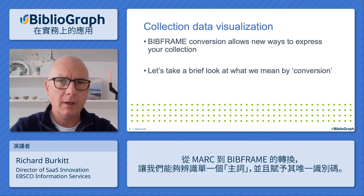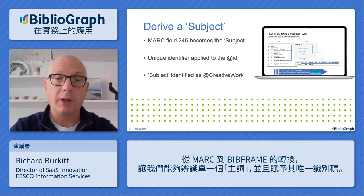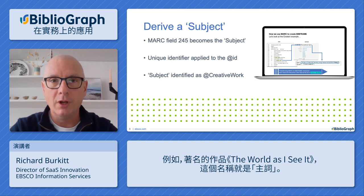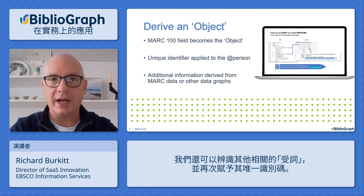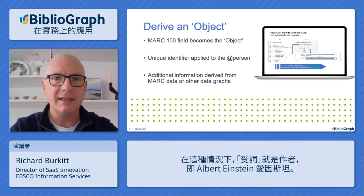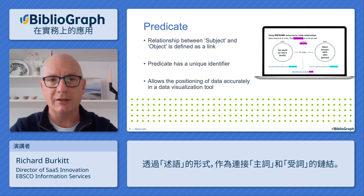Conversion from MARC records into BibFrame resources allows us to identify a subject and apply a unique identifier. For example, with the well-known work 'The World As I See It,' here is the subject. We can also identify an object and again apply a unique identifier — in this case, it's the author Albert Einstein. Crucially, we understand the relationship between the subject and the object in the formation of a predicate — a link between the subject and object.